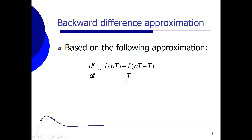When we go to the S domain and replace d/dt by s, we get that s times f equals f minus the previous f — which is z to the power minus 1 times f — divided by T. So we can say that s is equal to (1 minus z⁻¹) divided by T, and when we multiply numerator and denominator by z, we get s = (z − 1) / (z · T). We can now replace s by that expression.